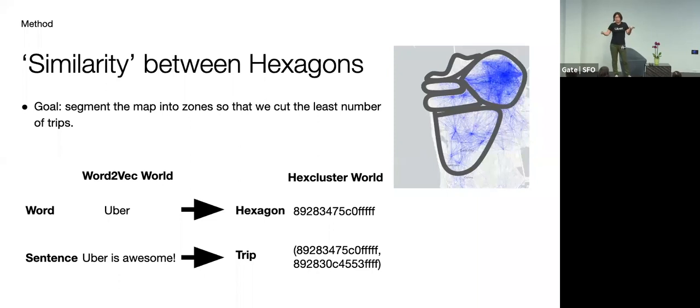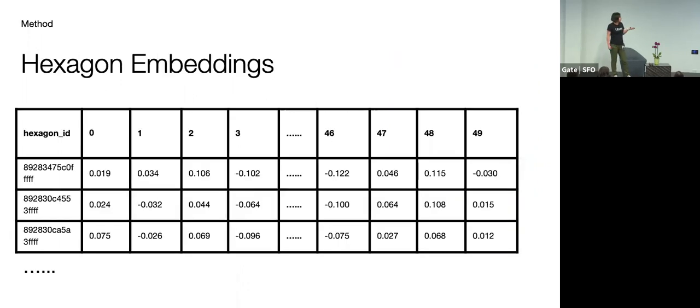Or the other way around, like there is an eater hexagon and then there are two restaurant hexagons that always delivers to that eater hexagon. Then we think these two restaurant hexagons are similar to each other. So that's the basic idea of how similarity is defined.